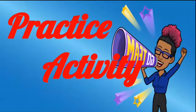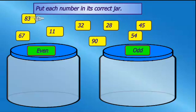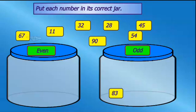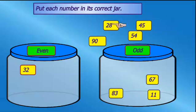Practice activity — go team! Put each number in its correct jar. So let's start with 83 in the odd jar. 67 — please look at your numbers in the ones place. 67 goes in the odd jar. 11 also goes in the odd jar. 32 — look at the number in the ones place to determine which jar each number goes into.